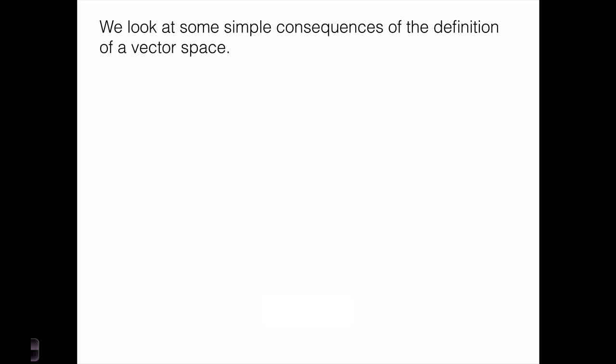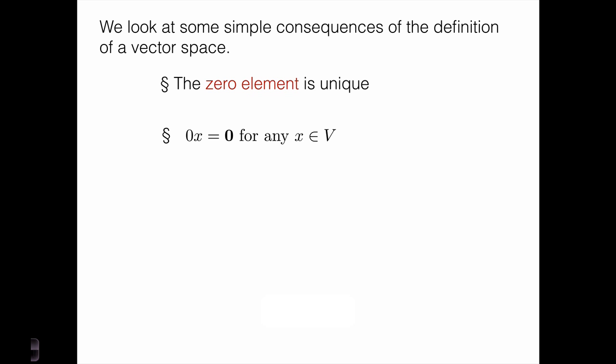We don't have to prove it separately in the case of Rn, in the case of matrices, in the case of vector spaces of functions. We can just show it in general from the axioms of a vector space and then we know that it's true in any particular example of a vector space. So let me give you some idea of what I mean.